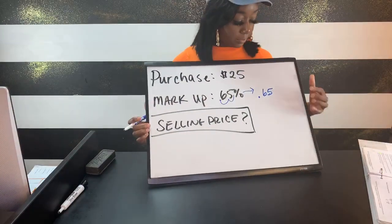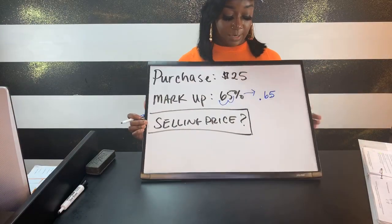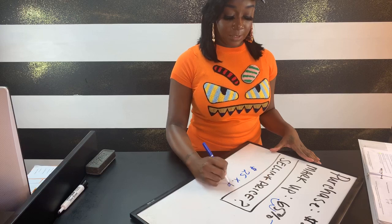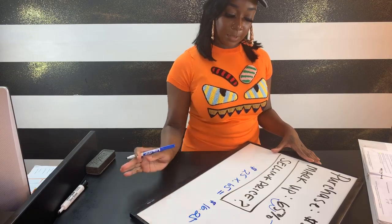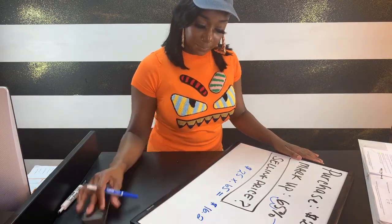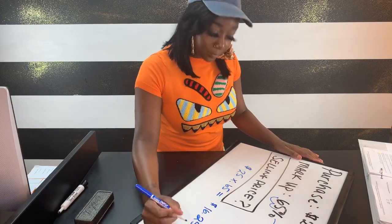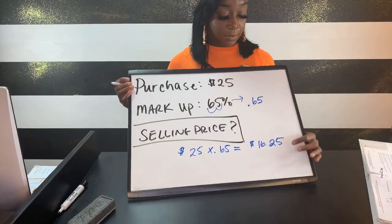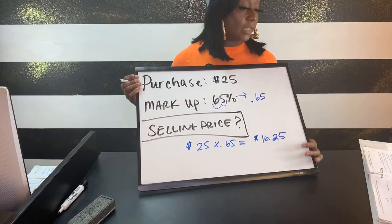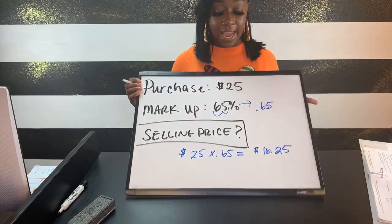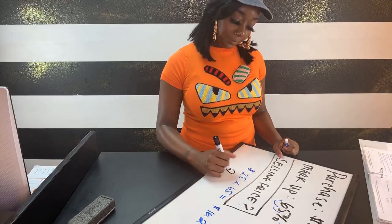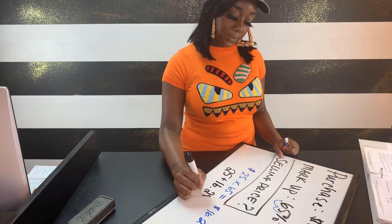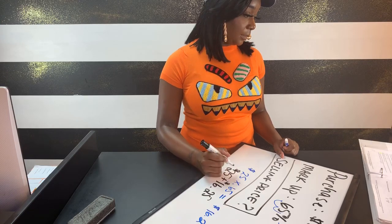We're going to take this decimal and multiply it times our original purchase price: $25 times the 65% markup, which gives us $16.25. That tells us the actual markup amount. Now to find the selling price, we take this markup price and add it to the original price, which gives us $41.25.